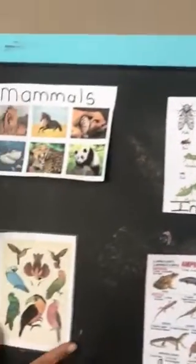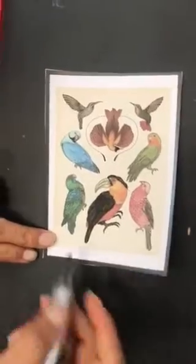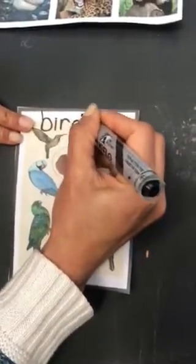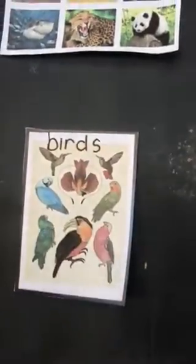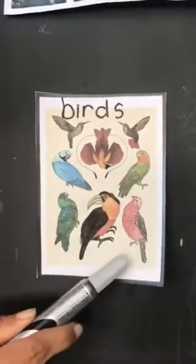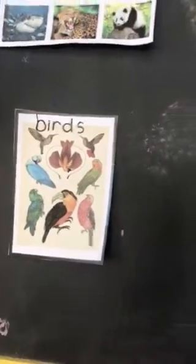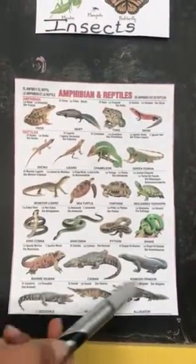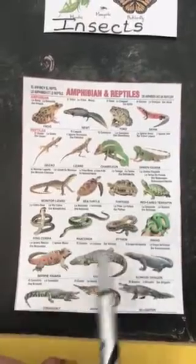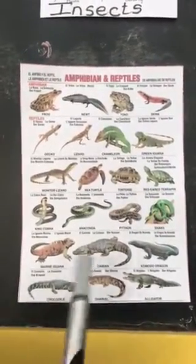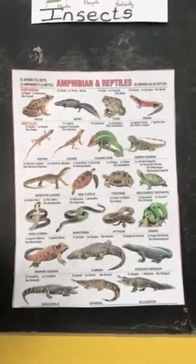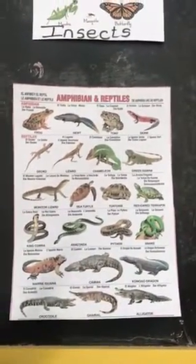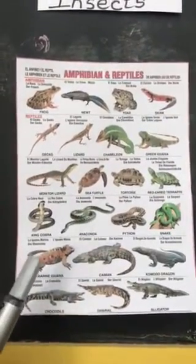Our next group we would call birds. Right again — birds. I want you to remember that chickens are also part of the bird group of animals. In our last group we have amphibians and reptiles. There are lots of pictures of reptiles here — we have snakes, turtles, tortoises, chameleons, and crocodiles. I also want you to remember that amphibians and reptiles also lay eggs, and that's how they start out their life cycle.